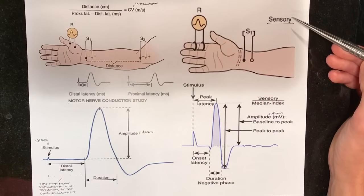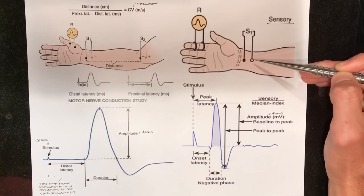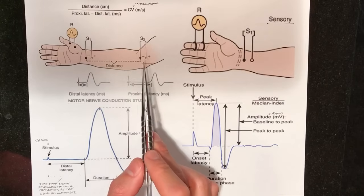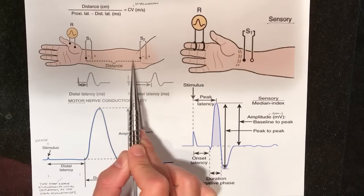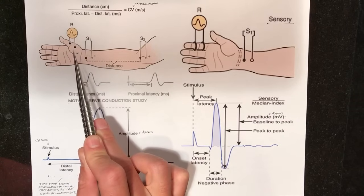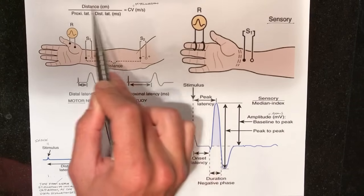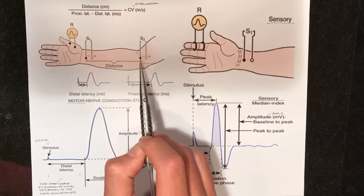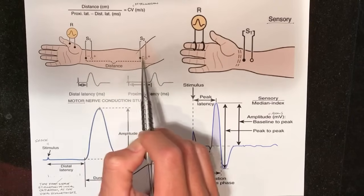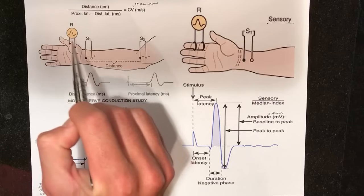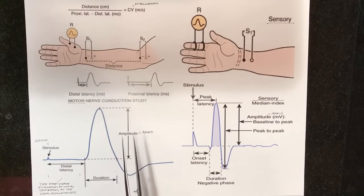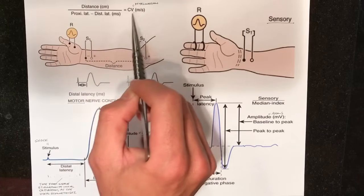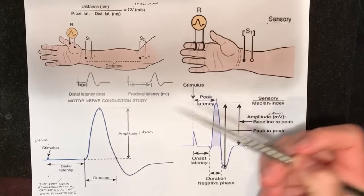Now let's talk about sensory studies. Sensory studies use the same concept, except that we only need to stimulate at one site. Why only one stimulation site for sensory versus two for motor? In a motor study, we have to account for not only the motor neuron, but also the neuromuscular junction and muscle depolarization itself. That's why there's a calculation involved: you take the proximal latency, subtract the distal latency, which eliminates the neuromuscular junction factor and gives you conduction velocity just within the nerve segment. Dividing the distance by that time gives you velocity in meters per second.